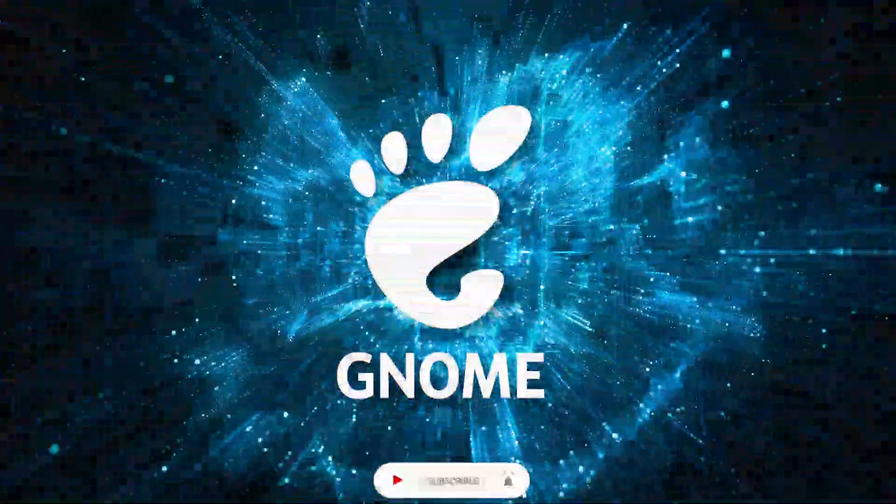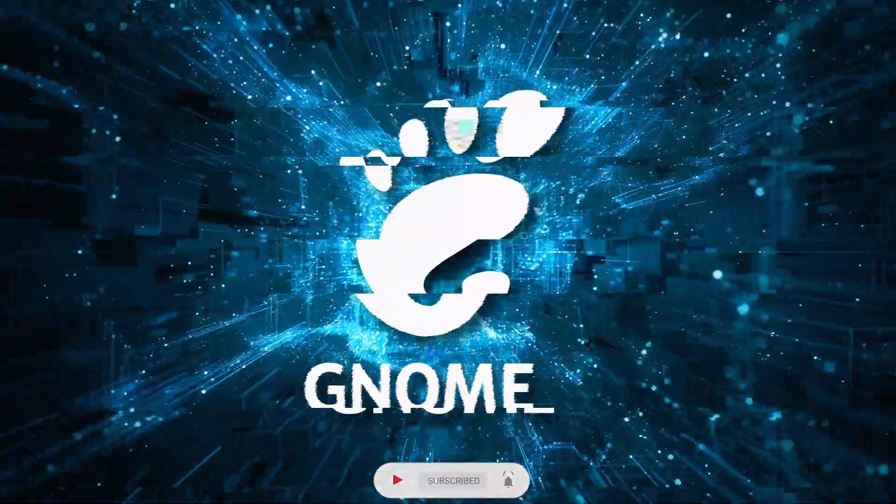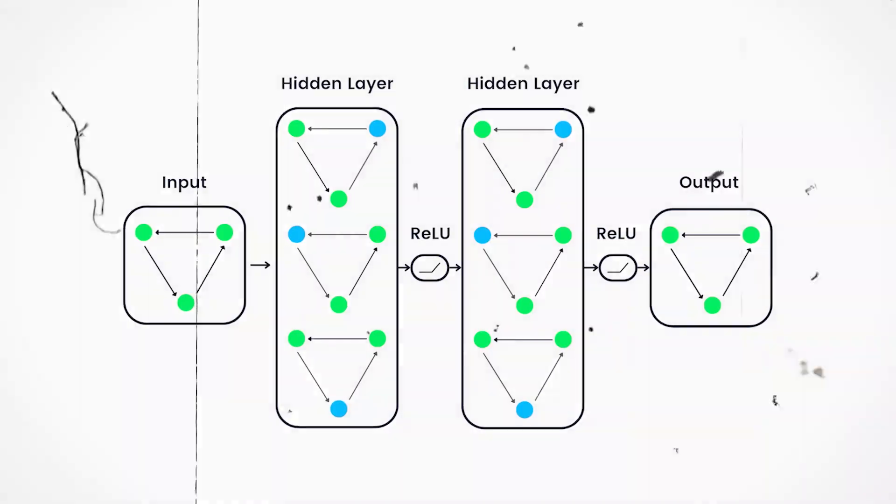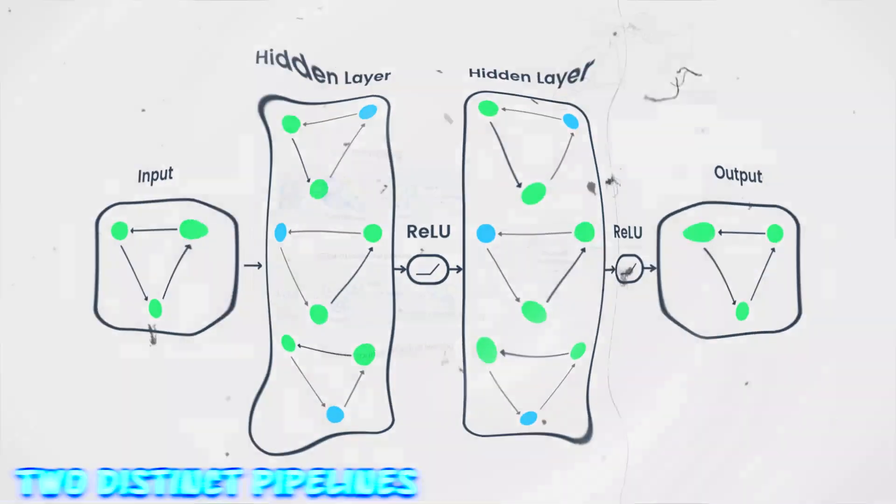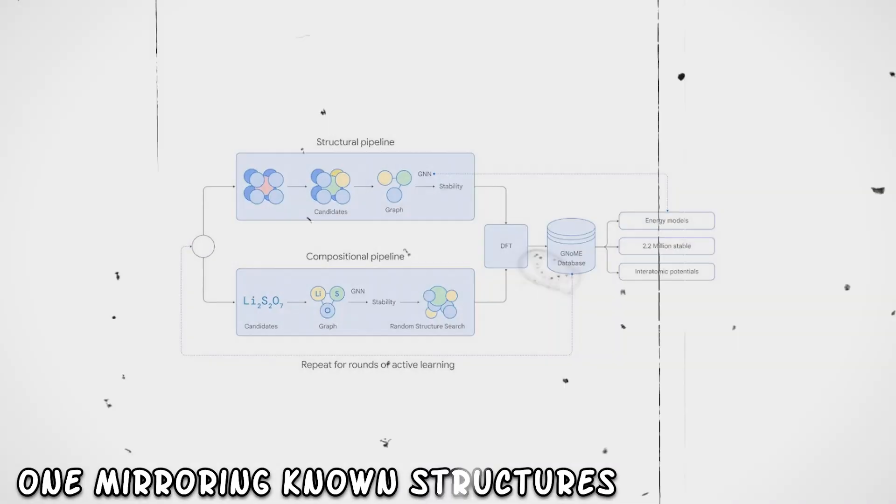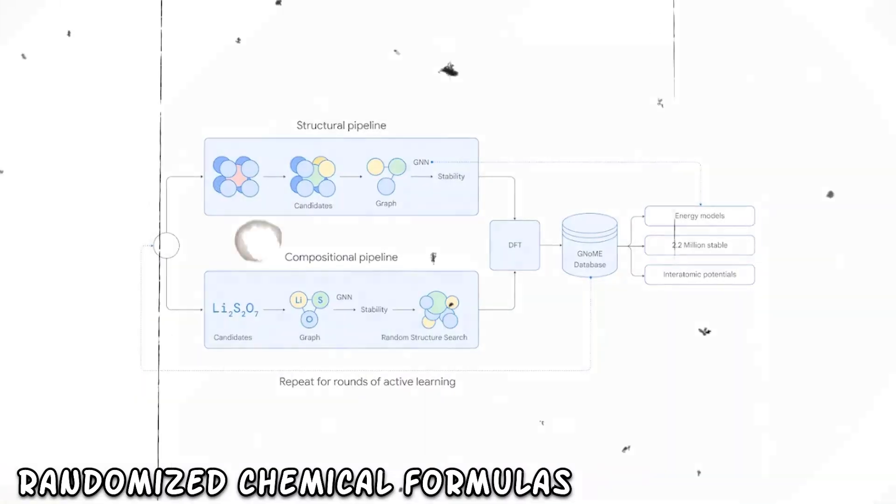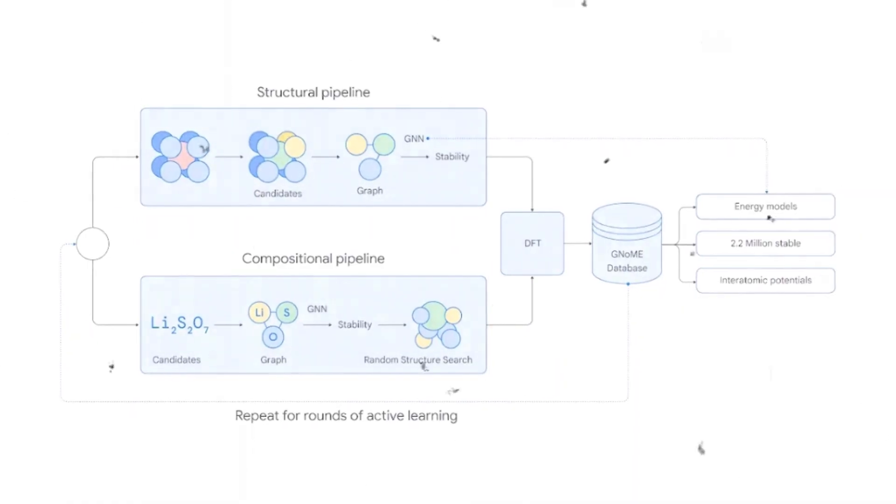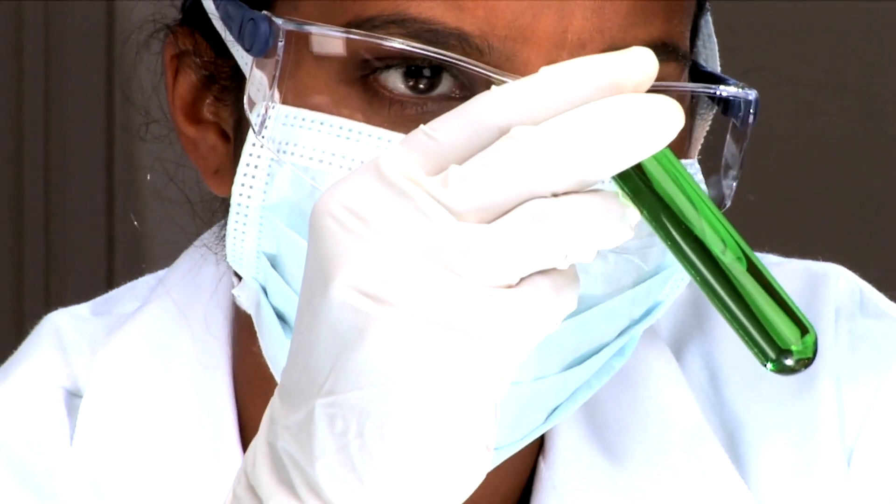GNOME's prowess lies in its unique approach. Employing graph neural networks, it crafted a roadmap to unveil new crystalline materials. Through two distinct pipelines, one mirroring known structures, the other embracing randomized chemical formulas, it unveiled a repository of stable materials, setting new benchmarks in materials science.